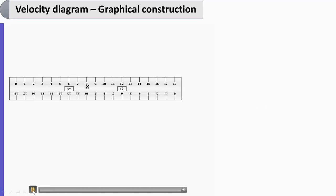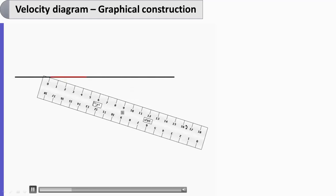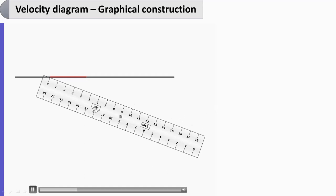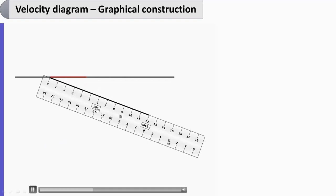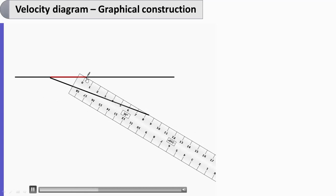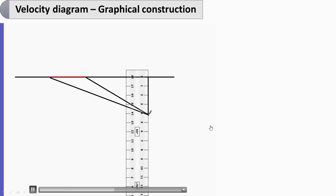Now let us start the construction. First we will represent blade velocity U by drawing a rough line and marking 4 centimeter on it. Then since the nozzle angle is 20 degree, we draw V1 as a line of 12 centimeter at an angle of alpha1 equal to 20 degree. Join this point to complete the relative velocity, and draw a vertical line to complete the inlet triangle.